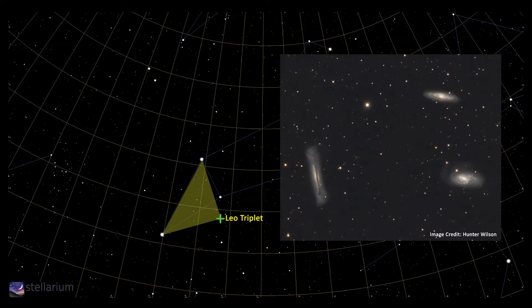In the Leo triplet, the first of the brighter pair, Messier 65, is magnitude 10.3, and shows us a spiral galaxy tilted away from us.